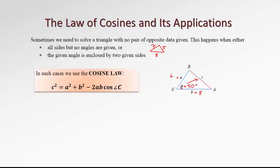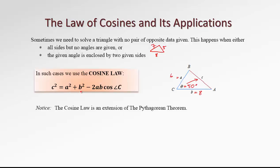On our diagram, the angle C is also called theta — that's the same angle. Notice that this formula has something to do with the Pythagorean equation; the cosine law is actually an extension of the Pythagorean theorem. If the angle C is actually 90 degrees, cosine of 90 degrees is zero, so that expression annihilates. Once it disappears, the cosine law reduces to the Pythagorean equation: C squared equals A squared plus B squared.